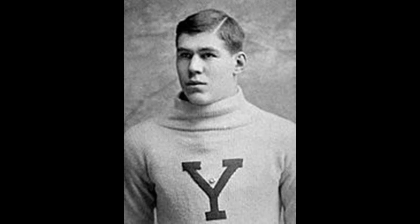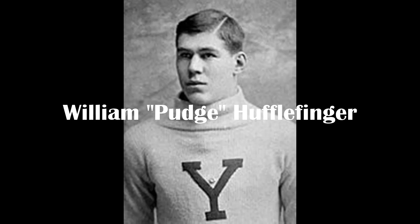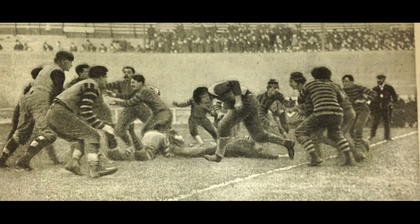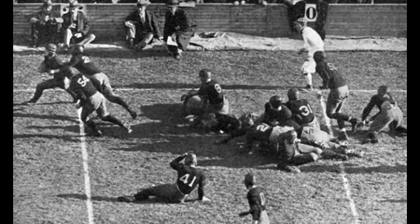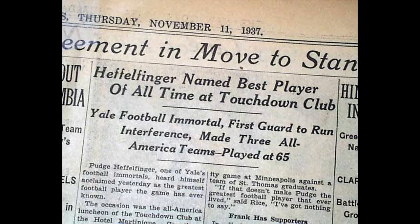The next guy revolutionized how blocking was done in American football. His name is William Heffelfinger — I'll call him by his nickname, Pudge — which he got during his time revolutionizing the Yale line. Instead of playing against whoever lined up against him, Pudge used his speed and strength to pull out from his guard position to run interference for the ball carrier behind him, which revolutionized the running game. He played at Yale from 1888 to 1892, coached by Walter Camp — the father of college football — who named Pudge to the All-American team three times, which was basically like getting a Heisman.